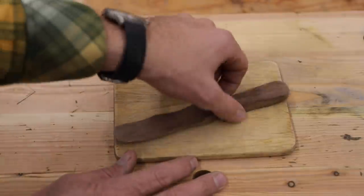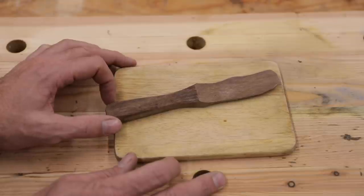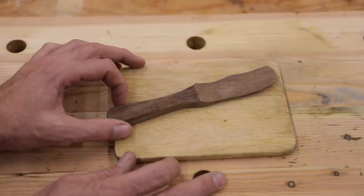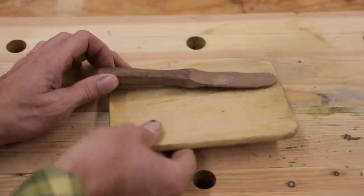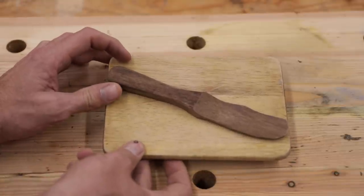And so how we use it is of course to butter, put butter on toast or bread. The Swedes eat a lot of bread, they eat a lot of cheese, and to take this little individual breadboard with your own butter knife is kind of cool.